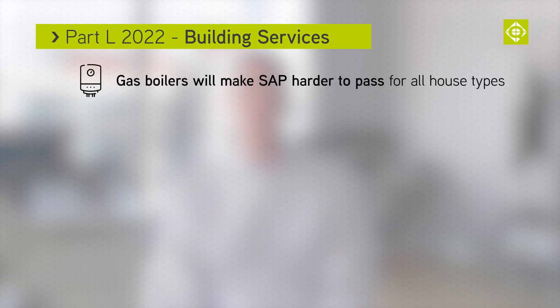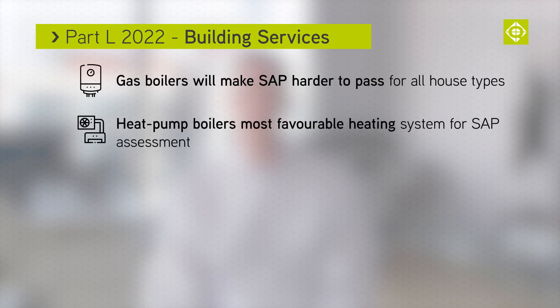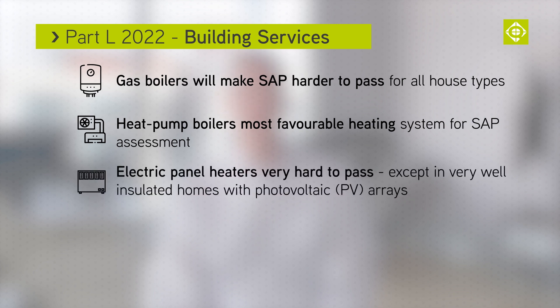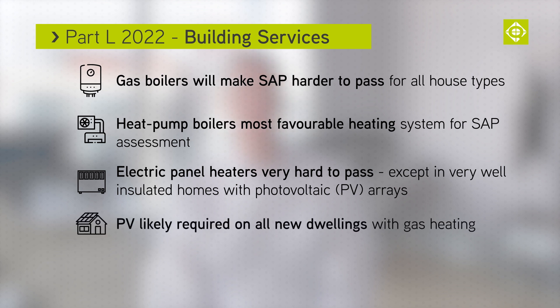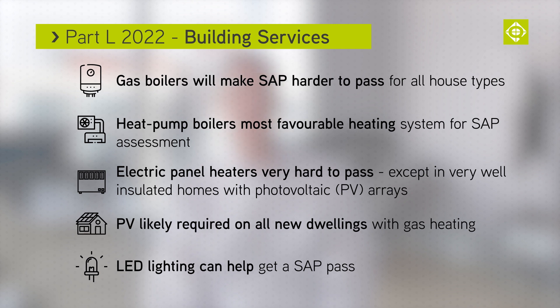Gas boilers will make a SAP assessment harder to pass for all home types. Heat pump boilers will be the most favourable heating systems available for new build dwellings. Electric panel heaters will make it hard to get a pass except in small apartments and very well insulated homes with PV. Photovoltaics, or PV, are likely to be required on all new build schemes which use gas. LED lighting can also help to get a pass.